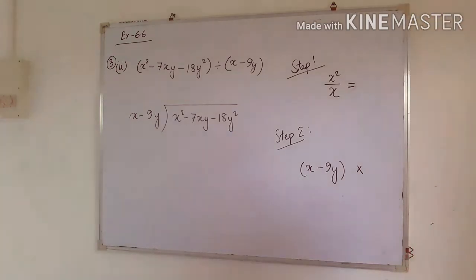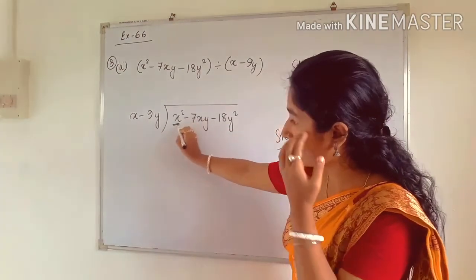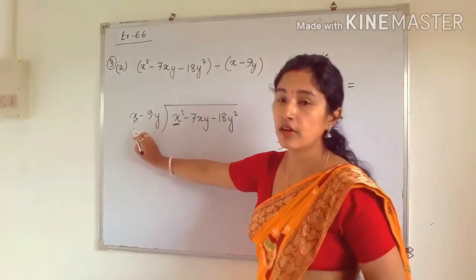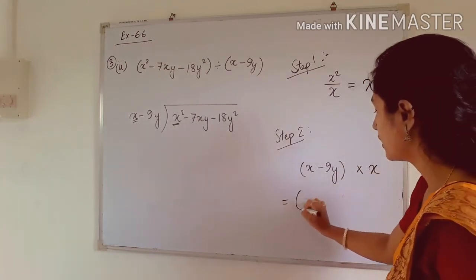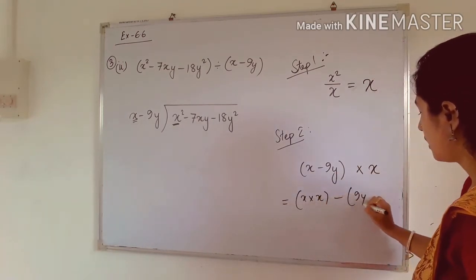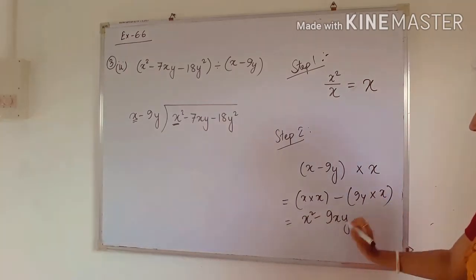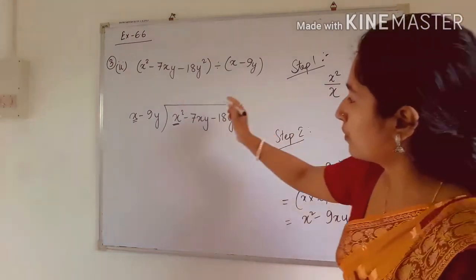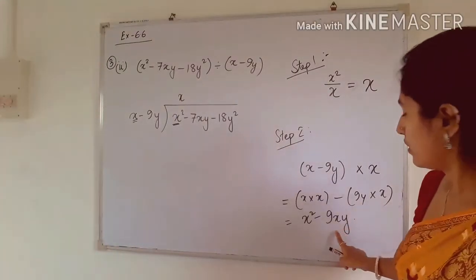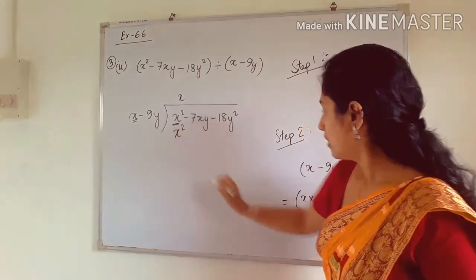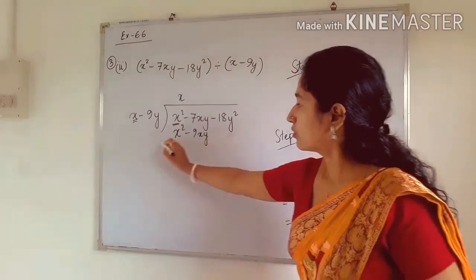For the next question: in step 1, take the first term of the dividend and divide by the first term of the divisor. x² ÷ x = x. We multiply x by the binomial: x × (x − 9y) = x² − 9xy. We write x in the quotient, then place x² and −9xy below the corresponding terms of the dividend — x² below x², and −9xy below 7xy. We will then subtract.